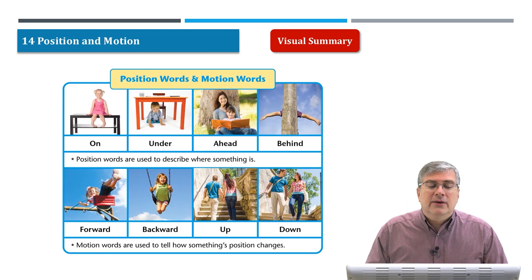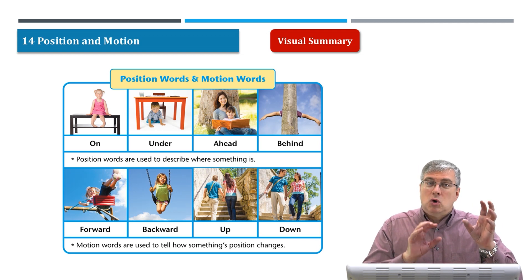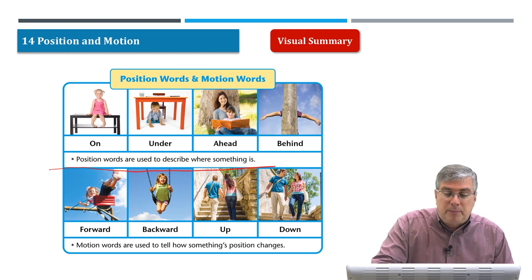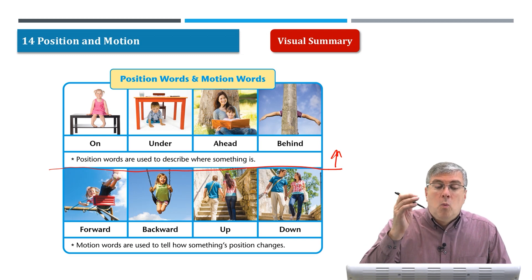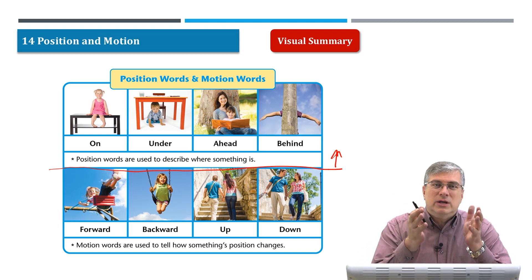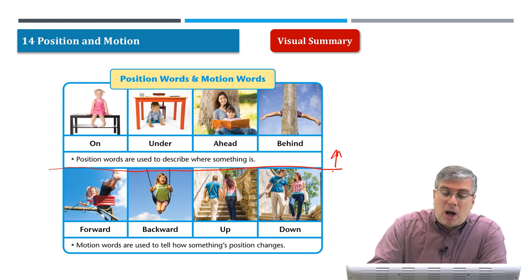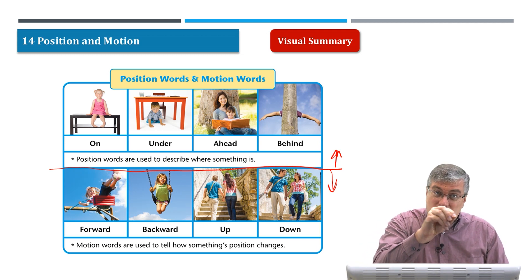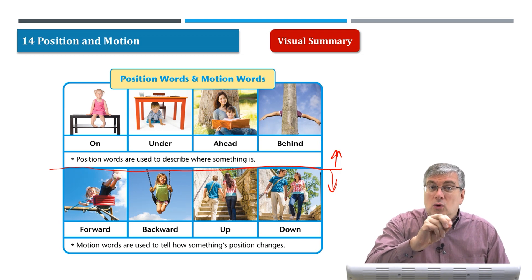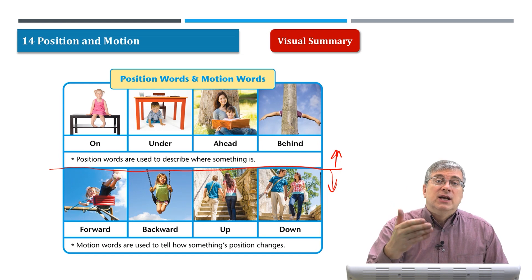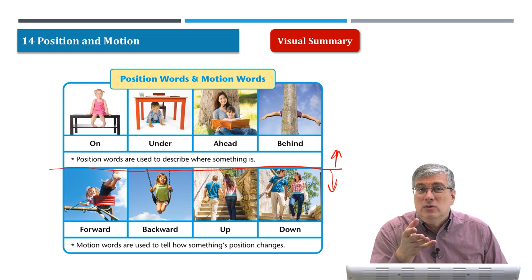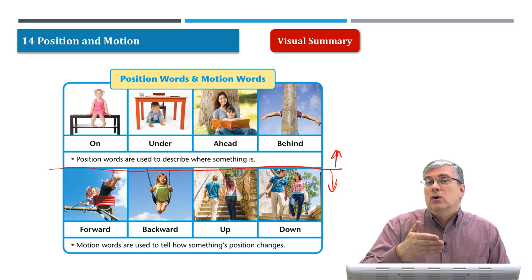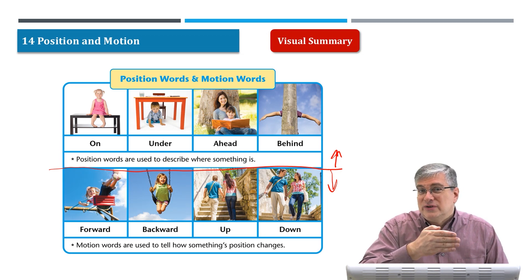Let's talk about the first main idea: position words and motion words. Looking at this chart, it's divided into two parts. The top part talks about where things are — maybe at the beginning, you're just looking at something and saying where is the object? The bottom part shows motion. First you have an object in a certain location or position, maybe it will move, and that is the motion. What kind of words can we use to describe where things are, and how their position can change?